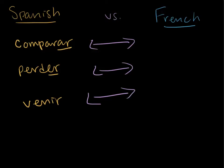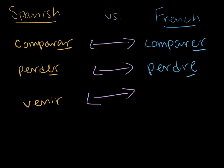These three categories have rough equivalents in French, which is interesting and helpful. If you only know how to say a word in Spanish and need to guess the French, you can use these patterns as a guideline. AR verbs roughly correlate to ER verbs in French — so 'comparar' becomes 'comparer'. ER verbs roughly correlate to RE verbs — so 'perder' becomes 'perdre'. And IR verbs in Spanish become IR verbs in French — so 'venir' stays 'venir'.